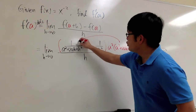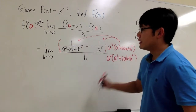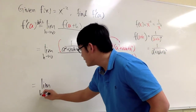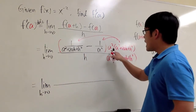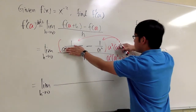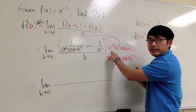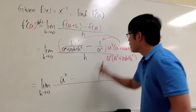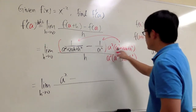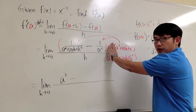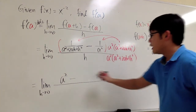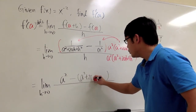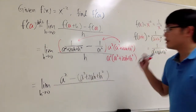All we need to do is take the LCD and distribute it into the top. Writing the limit as h goes to 0: on the top, when you multiply 1 over a squared plus 2ah plus h squared by the LCD, that denominator cancels and we just have a squared left. Then we subtract 1 over a squared times the LCD — the a squared cancels — leaving us subtracting the quantity a squared plus 2ah plus h squared. Make sure to use parentheses here.